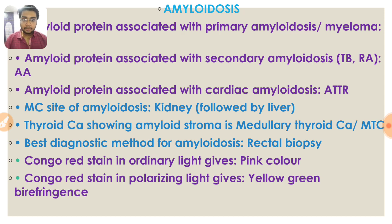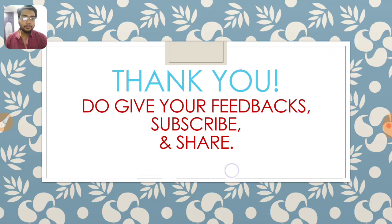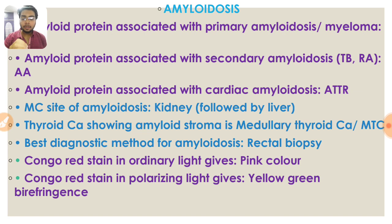The best diagnostic method for amyloidosis is rectal biopsy. Congo red stain stains amyloid pink under ordinary light, but under polarizing light it shows yellow-green birefringence.